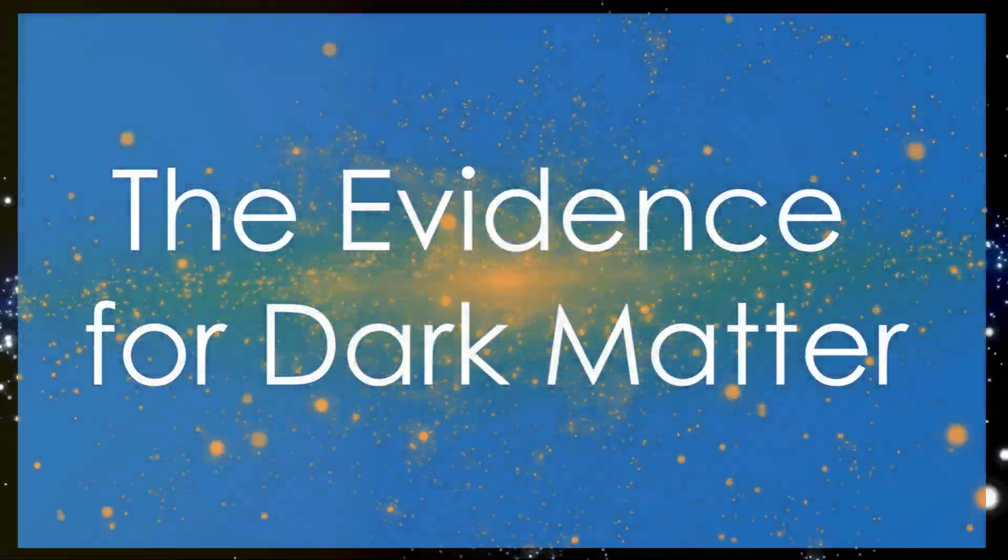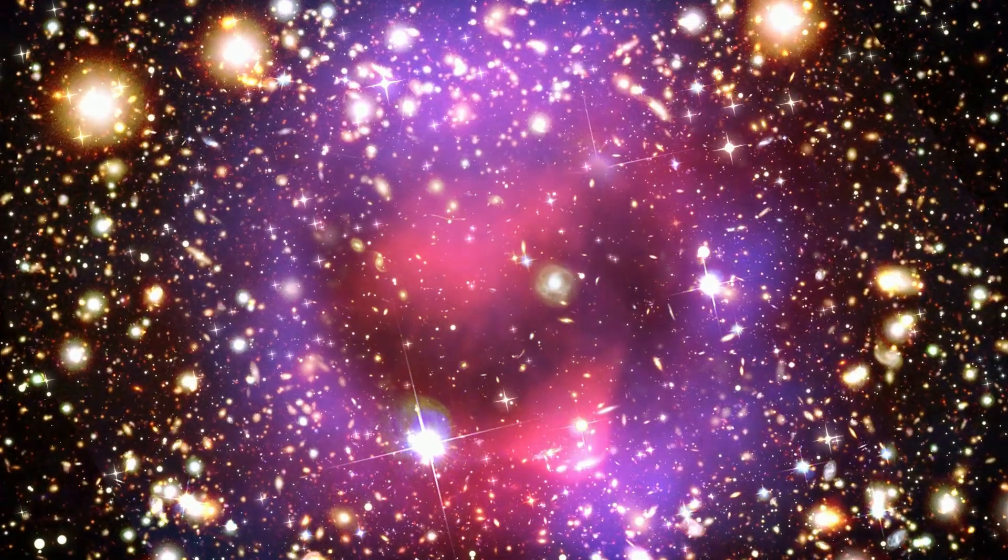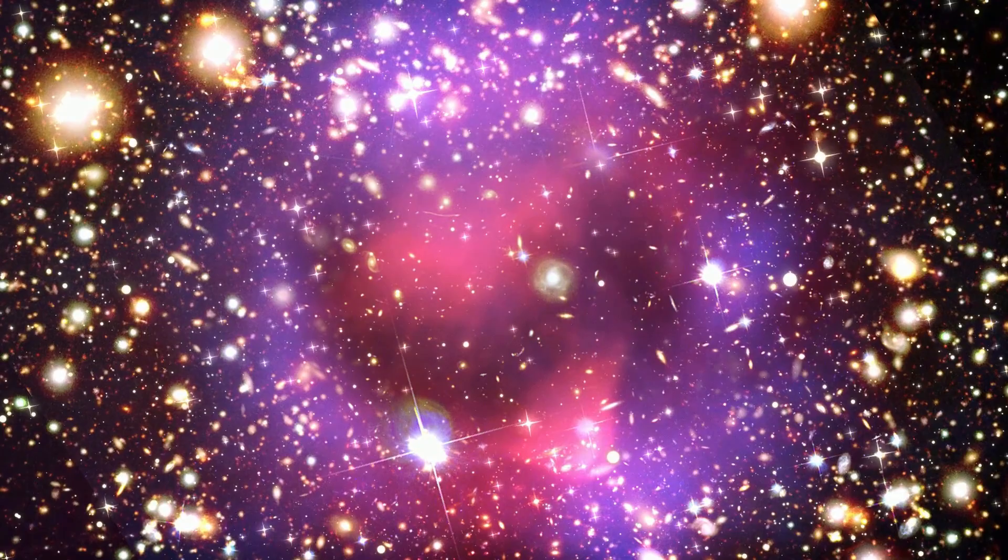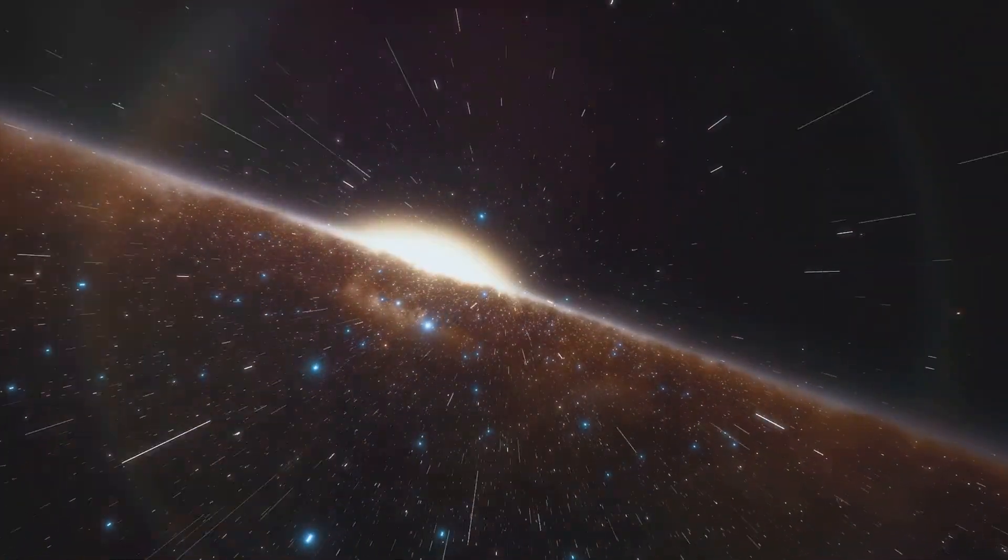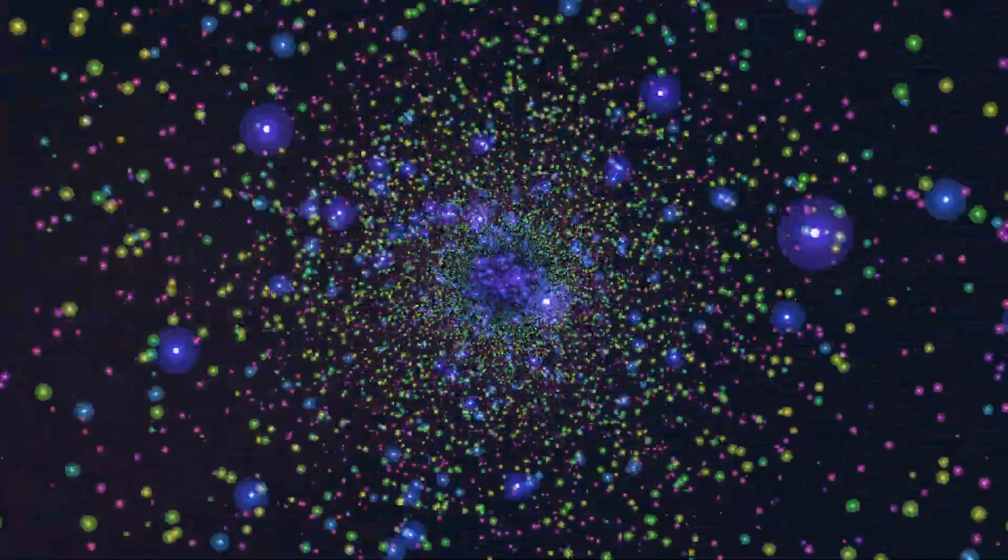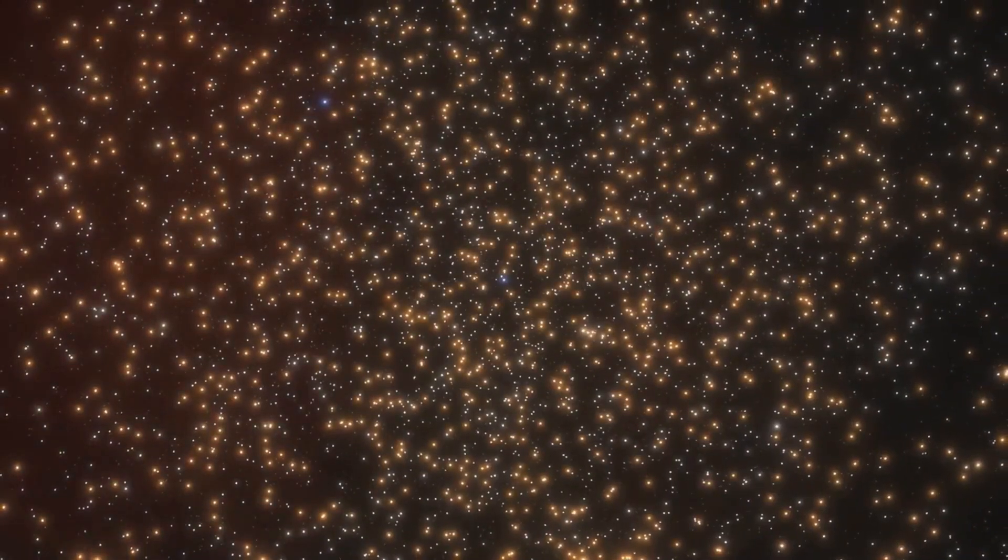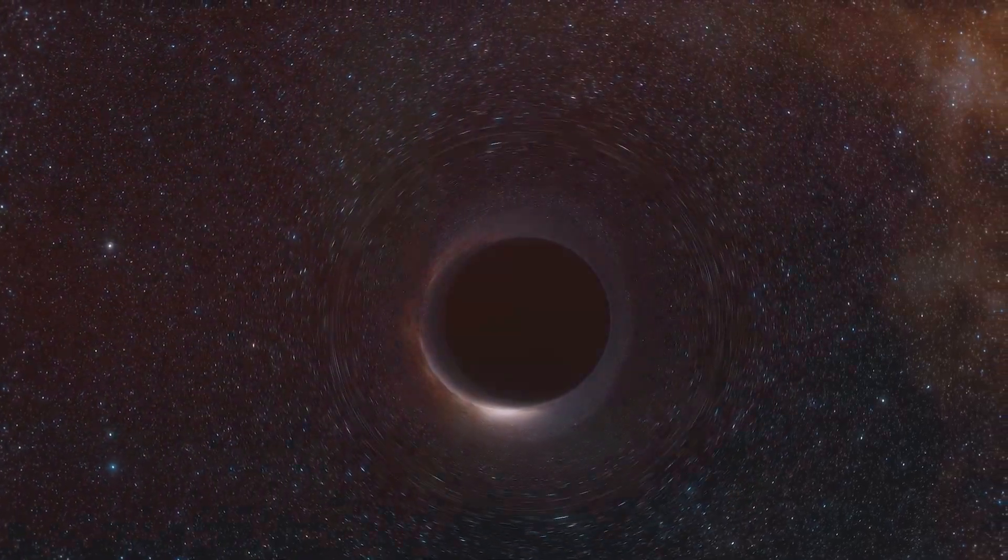The first clues about dark matter came from observing the speeds of stars and galaxies. In the 1930s, astronomer Fritz Zwicky noticed something odd about the coma cluster. He calculated the total mass of the cluster based on visible light. There wasn't enough visible matter to keep the galaxies from flying apart. Something unseen must be holding the cluster together. He called this missing mass dark matter.